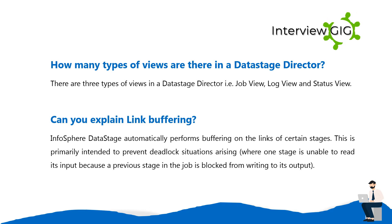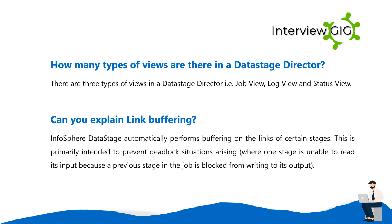How many types of views are there in a DataStage Director? There are three types of views in a DataStage Director: Job View, Log View, and Status View. Can you explain link buffering? InfoSphere DataStage automatically performs buffering on the links of certain stages. This is primarily intended to prevent deadlock situations arising where one stage is unable to read its input because a previous stage in the job is blocked from writing to its output.